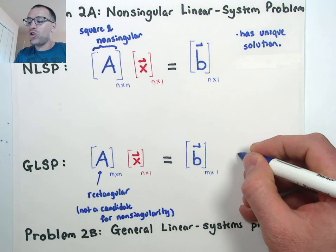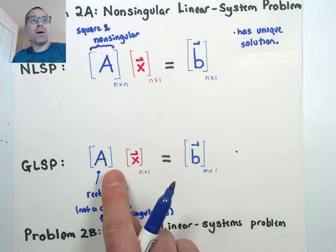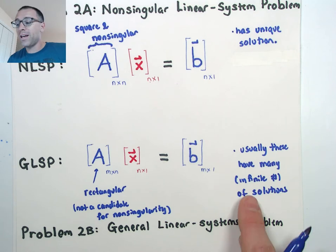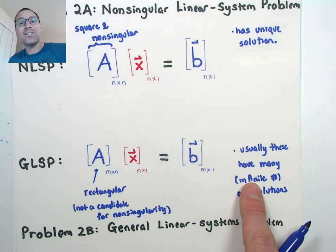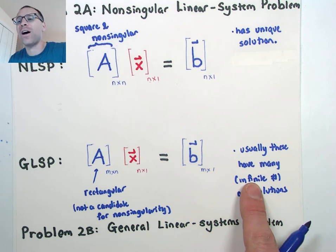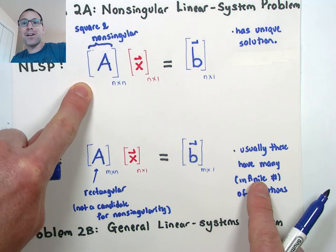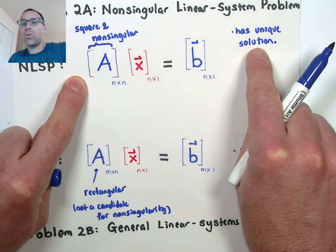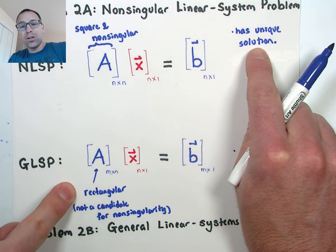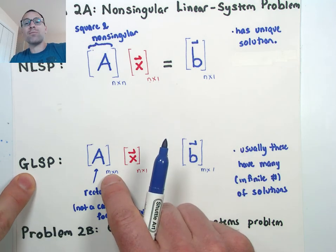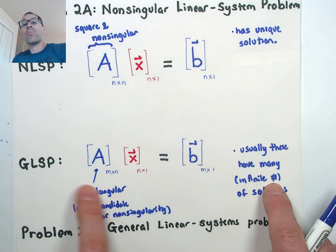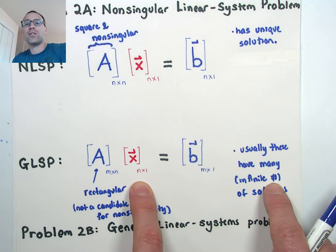Another major difference is that generally, if B is a linear combination of the columns of A, we're going to say there are many solutions — more than just many, an infinite number. As we get into the technology of how to solve general linear systems, we're going to figure out exactly how to classify all possible solutions. Non-singular linear systems always have a unique solution, while a rectangular matrix associated with the general linear systems problem, when B is a linear combination of the columns of A, probably has an infinite number of solutions.